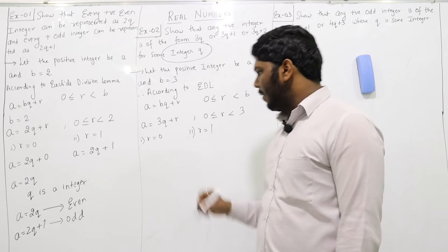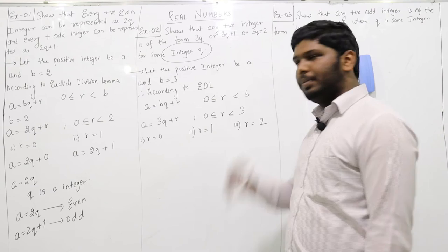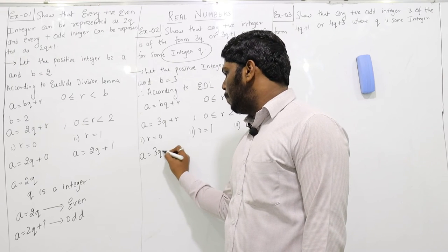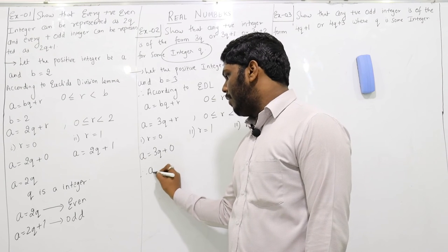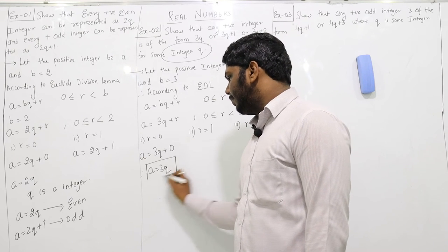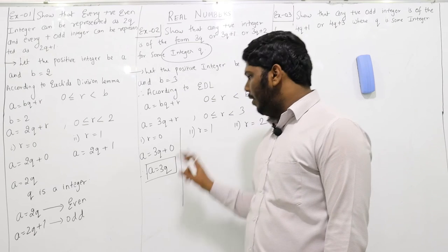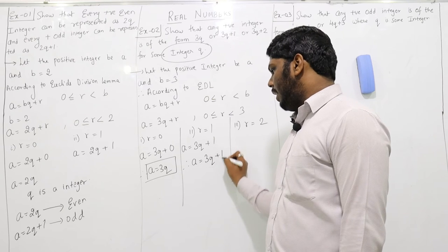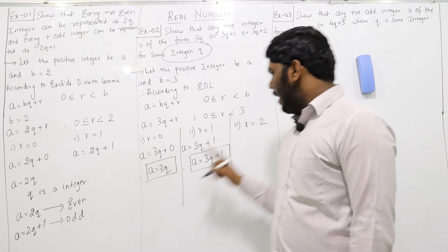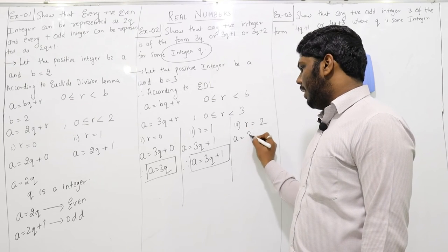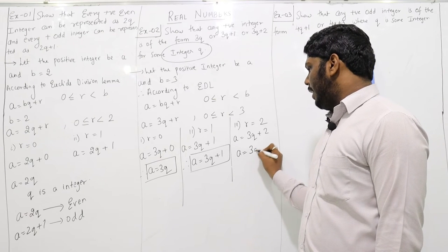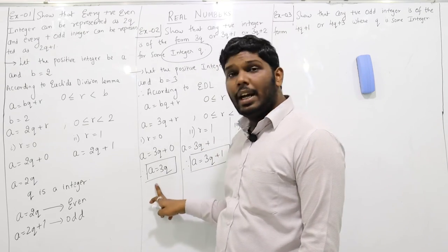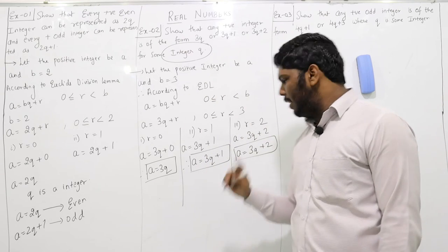The possible values of r are 0, 1, and 2. In case r is equal to 0, A is equal to 3q plus 0, so A equals 3q. In the second case, r is equal to 1, so A equals 3q plus 1. In the third case, r is equal to 2, so A equals 3q plus 2. This means any positive integer can be written in the form of 3q, or 3q plus 1, or 3q plus 2.